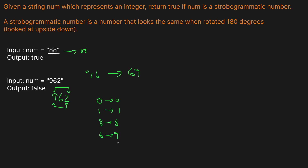A 6 will only be the same if we flip a 9 upside down. The reason 96 is the same as 69 is because we can flip them either way and get the same number. For a 6 to be matched correctly it needs to be paired with a 9, because when a 9 is flipped it becomes a 6, and the other way around. So 9 flips to 6.